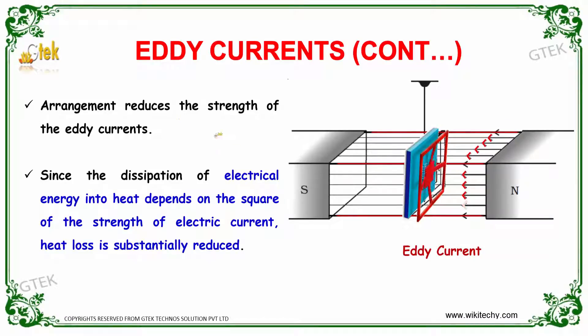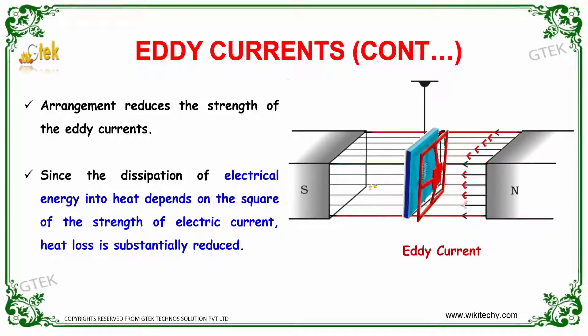Since the dissipation of electrical energy into heat depends on the square of the strength of the electrical current, obviously the heat loss is substantially reduced.